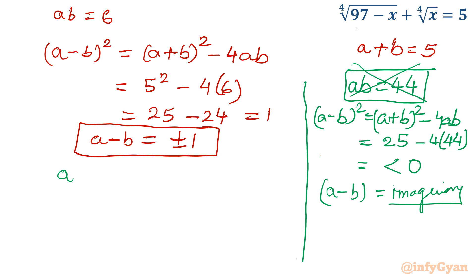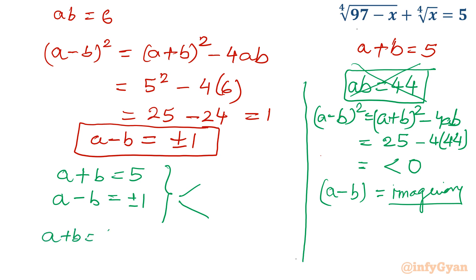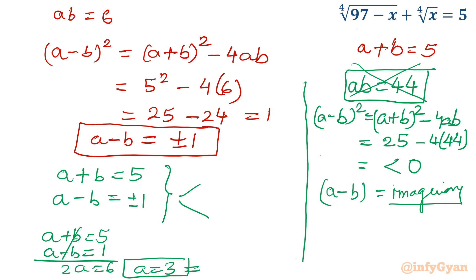Coming back to ab equals 6 with a plus b equals 5: using (a minus b)² equals 25 minus 24 equals 1, so a minus b equals plus or minus 1. Taking a plus b equals 5 and a minus b equals 1, adding both gives 2a equals 6, so a equals 3 and b equals 2. By symmetry, the second solution is a equals 2 and b equals 3.